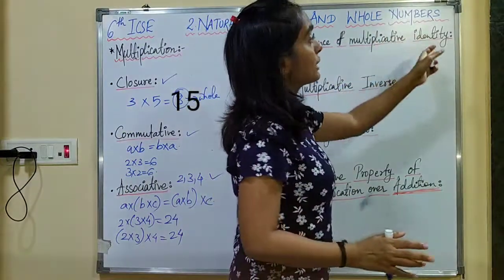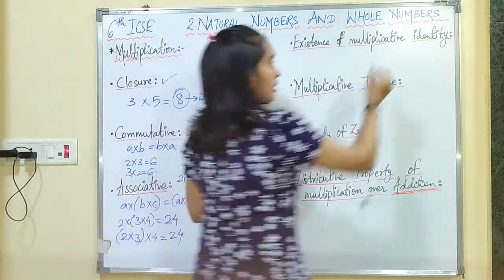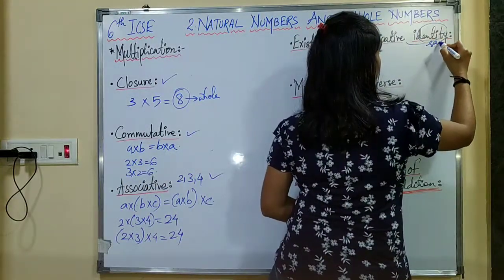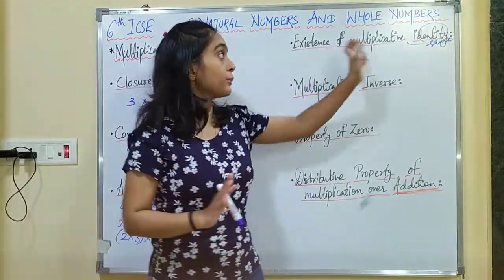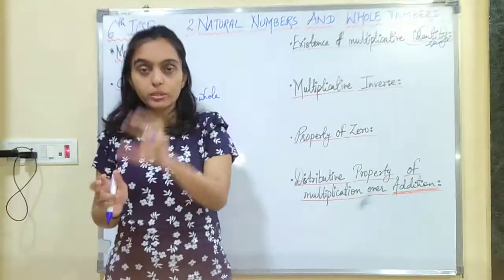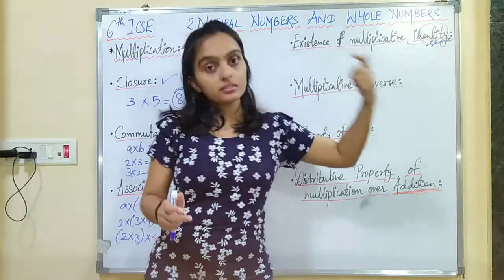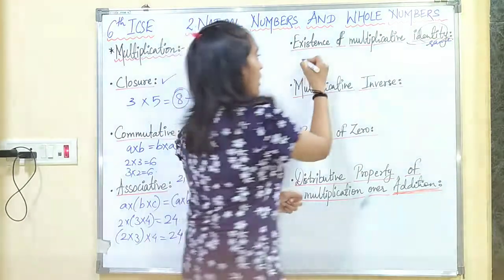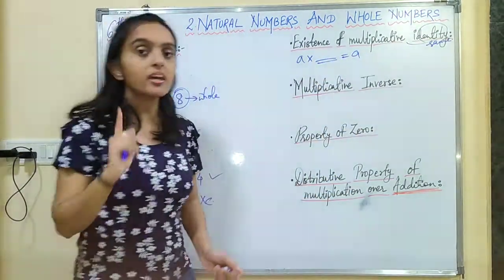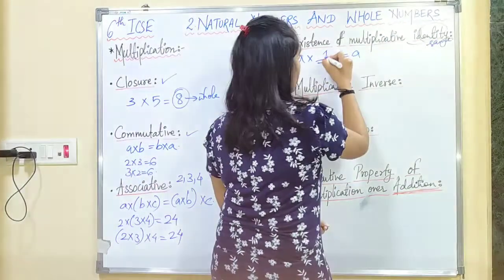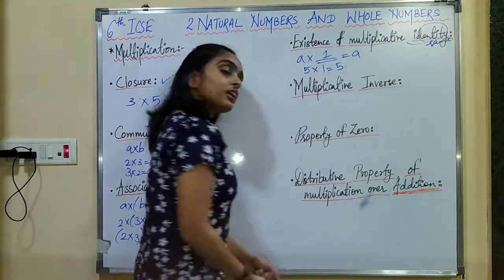Now, existence of multiplicative identity. Identity means the same element — you multiply a whole number by something to get the same number. So if I have 8 multiplied by something and it gives 8, that whole number is 1. For example, 5 multiplied by 1 is again 5. So 1 is the multiplicative identity.